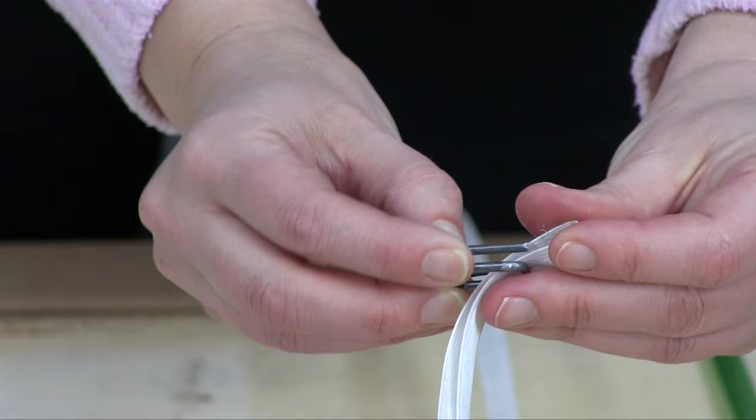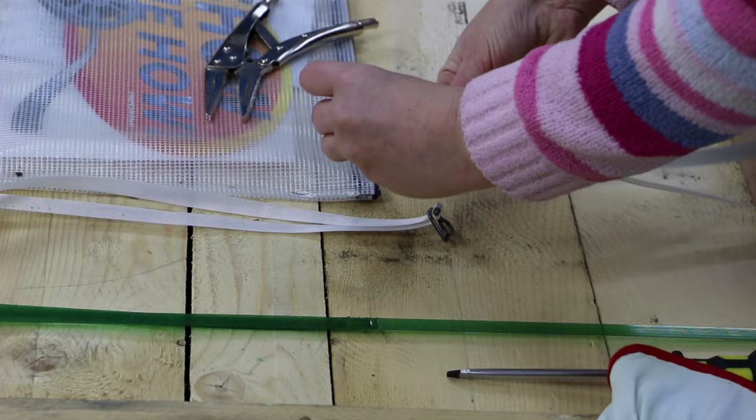First prepare your strapping around your crate or box. Then insert end of strapping up through center of buckle and around open leg to form a loop.